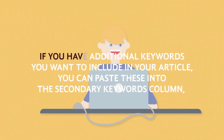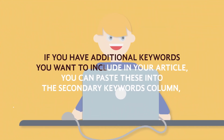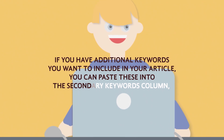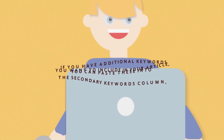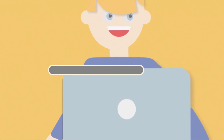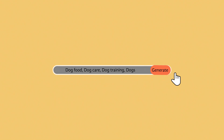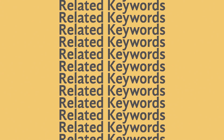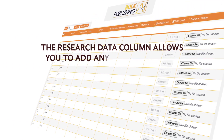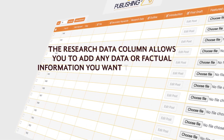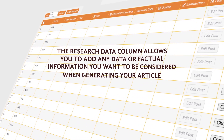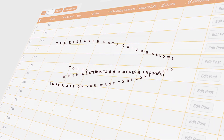If you have additional keywords that you want to include in your article you can paste these into the secondary keywords column. If not, you can use a prompt to generate some semantically related keywords. These can also be used as tags. The research data column allows you to add any data or factual information that you want to be considered when generating your article.